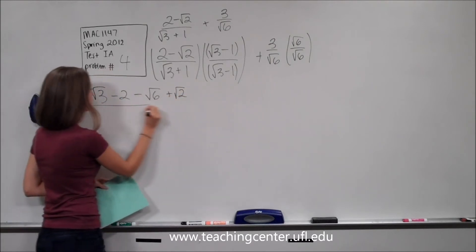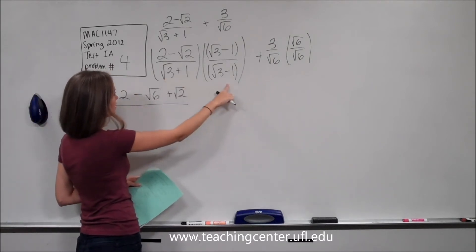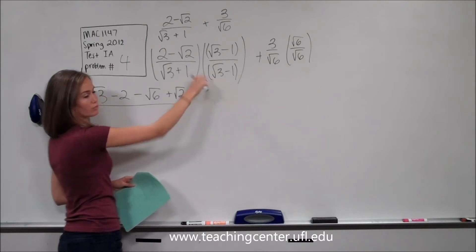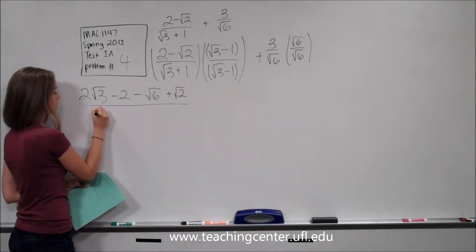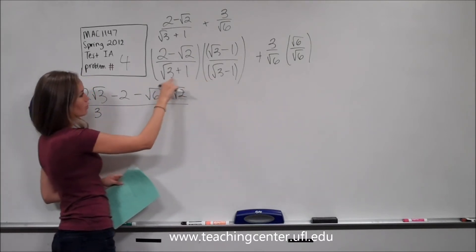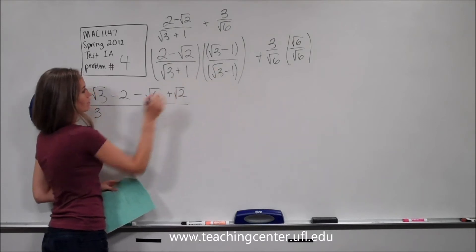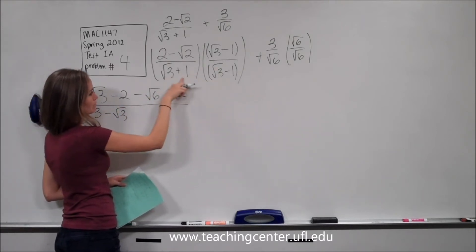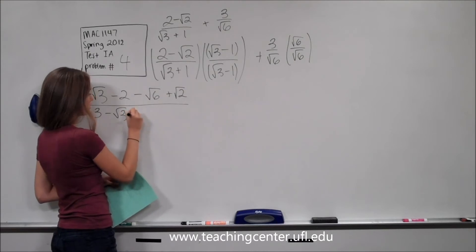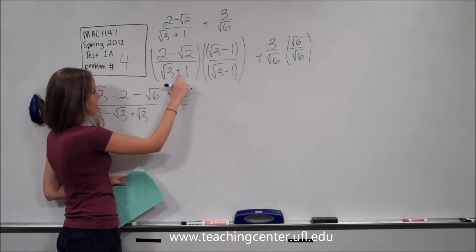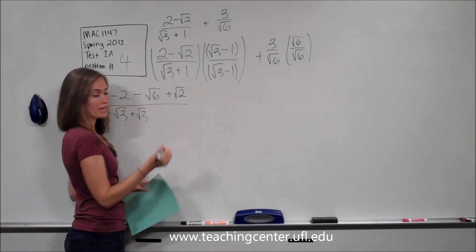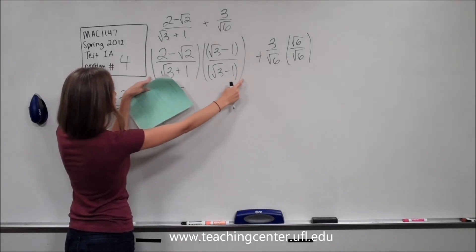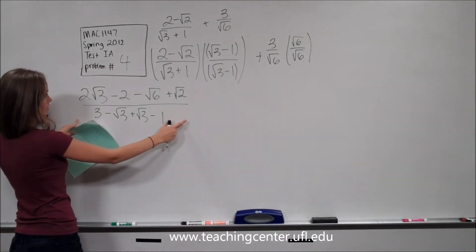That's our numerator, all over the denominator. For the denominator: square root of 3 times square root of 3 gives us 3, because the square roots cancel. Then square root of 3 times negative 1 gives negative root 3. Square root of 3 times positive 1 gives plus root 3. And positive 1 times negative 1 gives minus 1. So that's what this whole first term turns into.